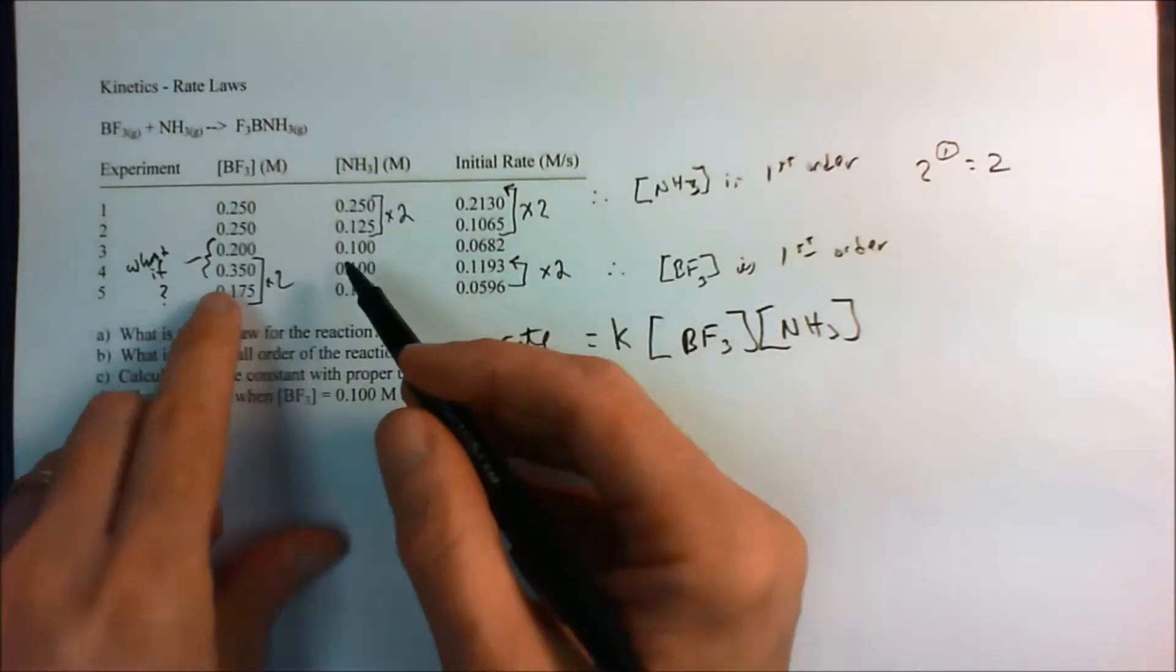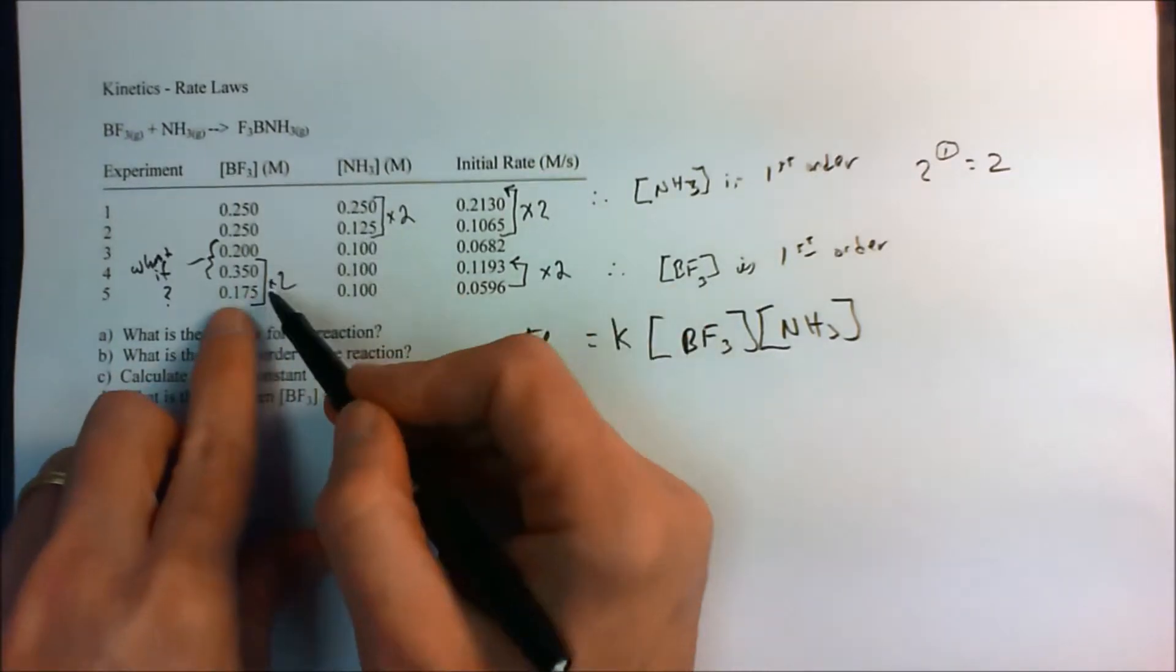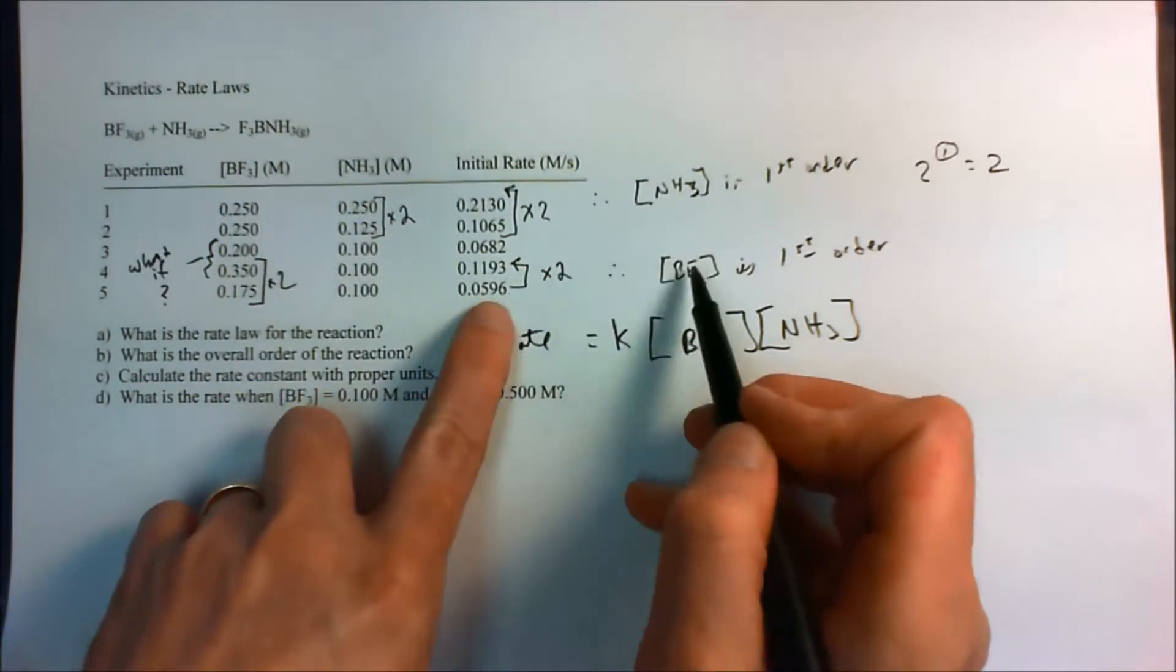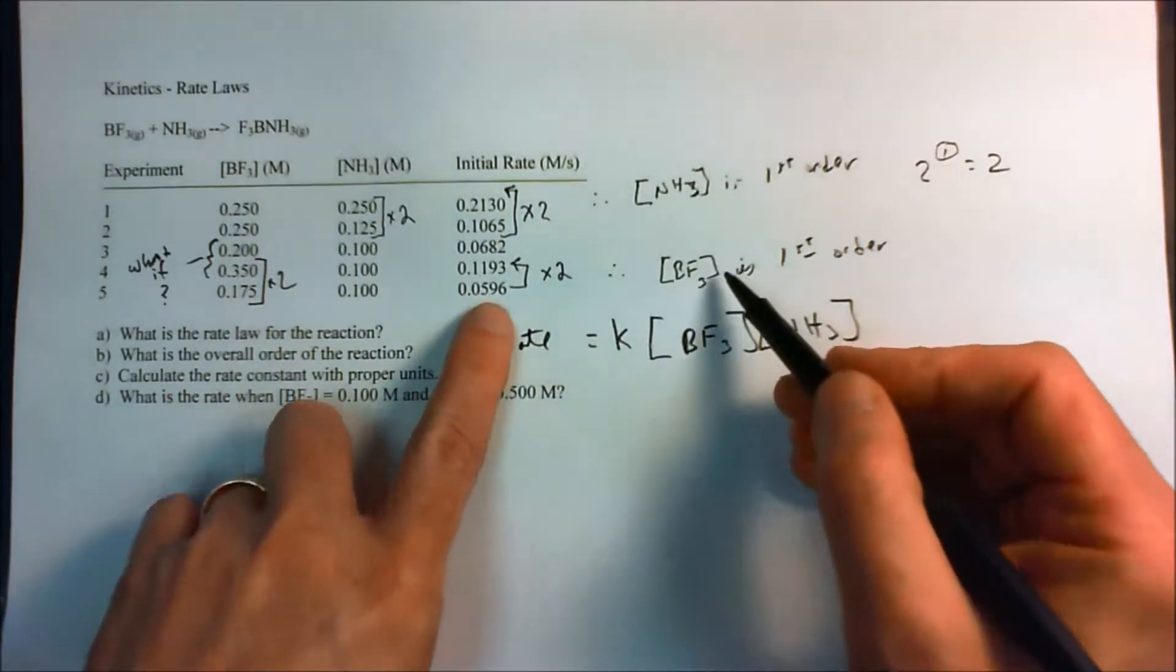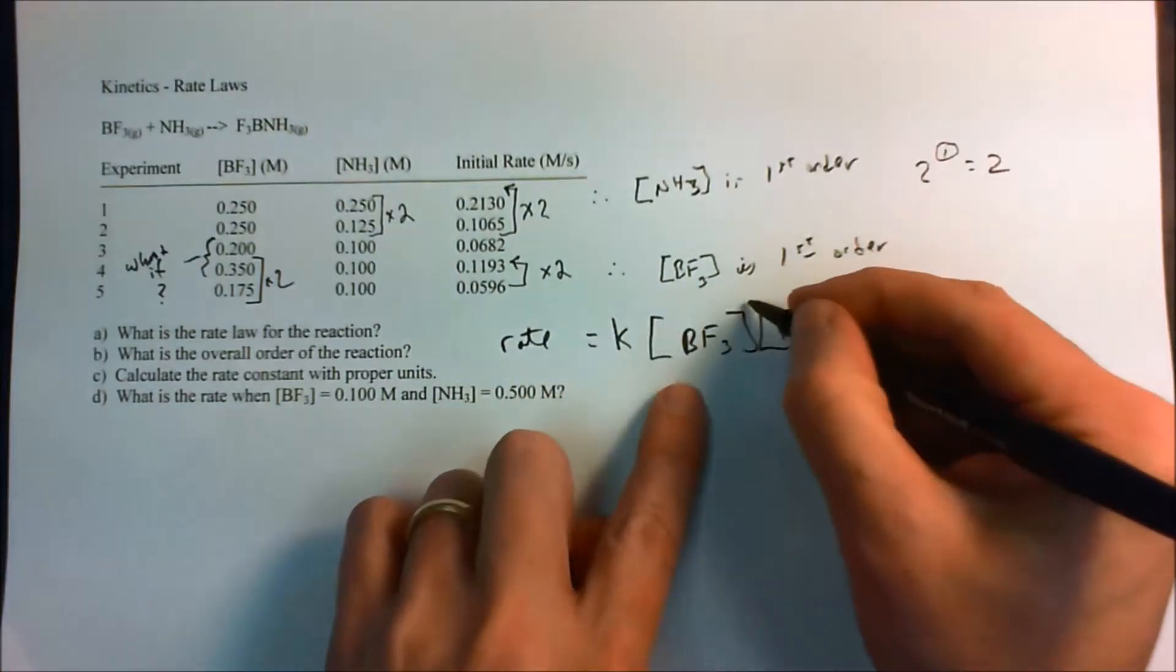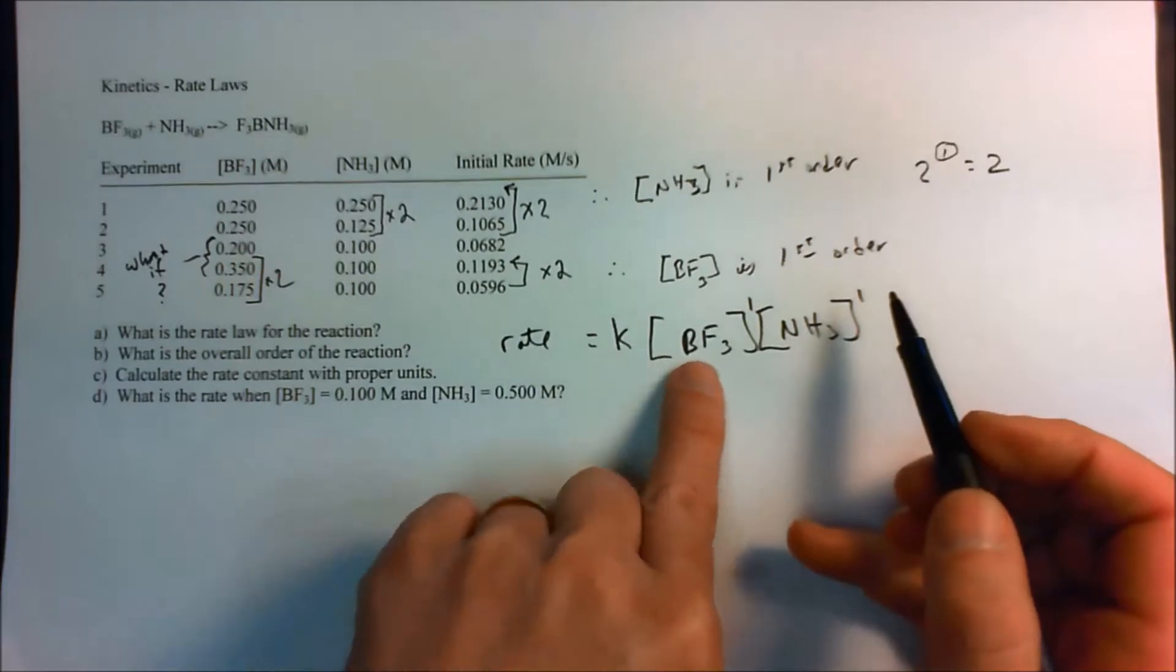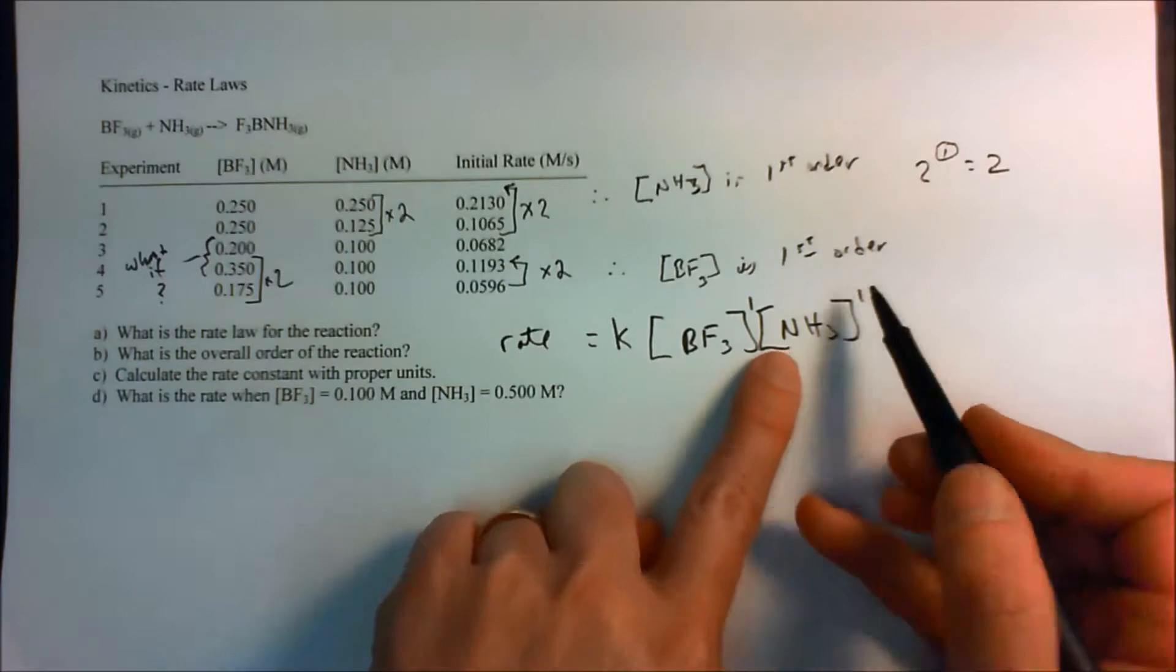Similarly, we look for another pair, which is like right here, where we hold ammonia constant this time. And this time we double the concentration of boron trifluoride. And what happens? Well, once again, when we double the concentration, this time of the boron trifluoride, the reaction rate doubled. The initial reaction rate doubled. And therefore, boron trifluoride is first order. And we can confidently write down that the rate law looks like this, where the rate is equal to the reaction rate constant, the concentration of boron trifluoride to the first, and the concentration of ammonia to the first.